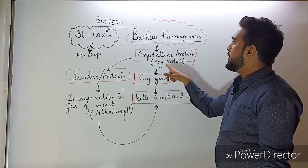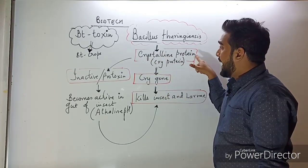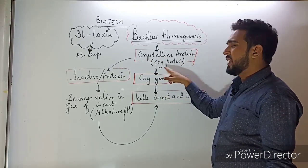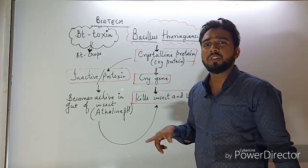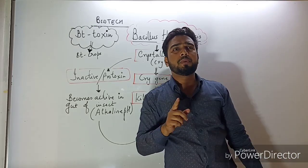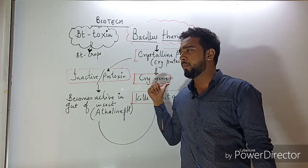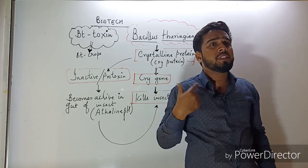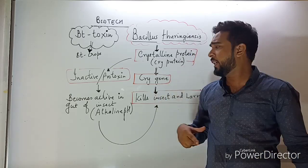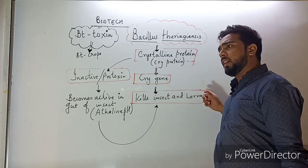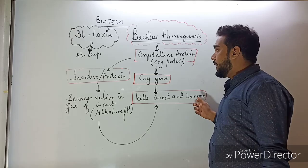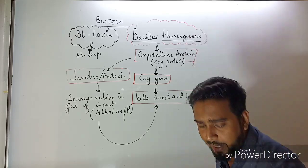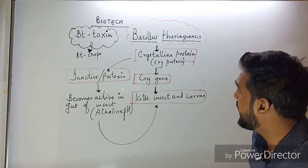The crystalline protein produced by Bacillus thuringiensis is also called cry protein. The gene involved in the production of this cry protein is called the cry gene, which has the ability to kill insects and larvae.